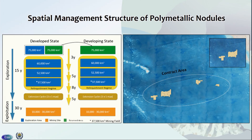For polymetallic nodules, looking at one contract from the Clarion-Clipperton zone, the polygons can be contiguous or non-contiguous across the contract area. There's a temporal component: it starts with a developed state having 150,000 square kilometers of exploration area. Half of that is reserved for a developing state. Over the 15-year exploration contract, part of that is relinquished, and they're left with 10,000 to 30,000 square kilometers that can actually be mined over a 30-year period. Again, that has not occurred yet, and those regulations are still in development.